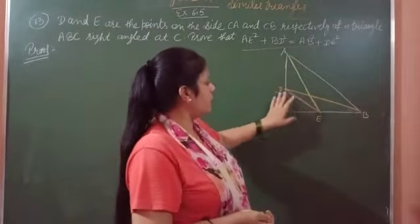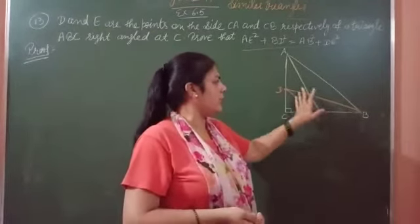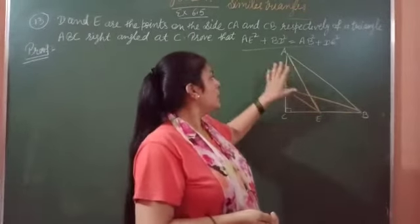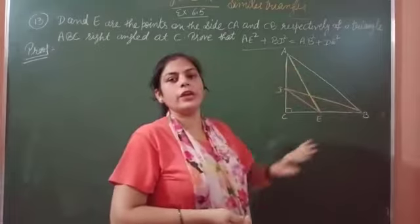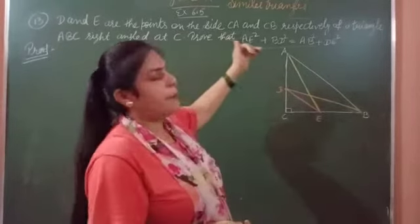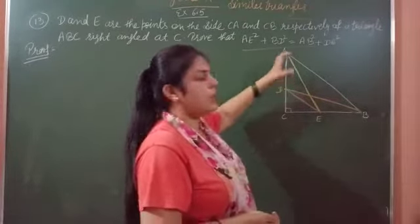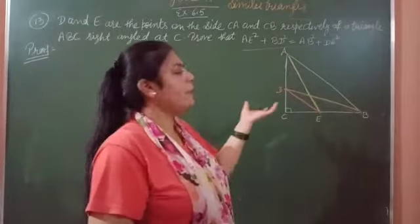Because angle C is right angle at C. So if we observe these triangles, DE is hypotenuse. If we take triangle BCD, BD is hypotenuse. AE and AB are also hypotenuses. So we have taken the right triangles. We may apply Pythagoras theorem.